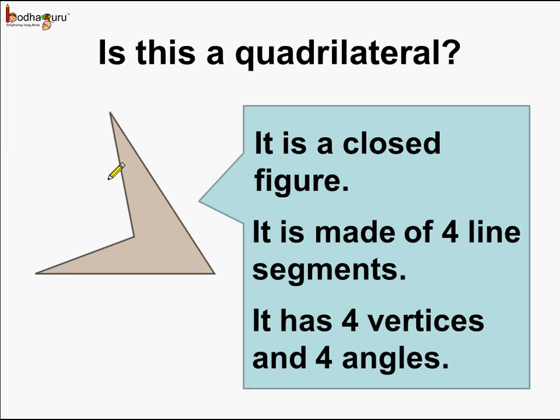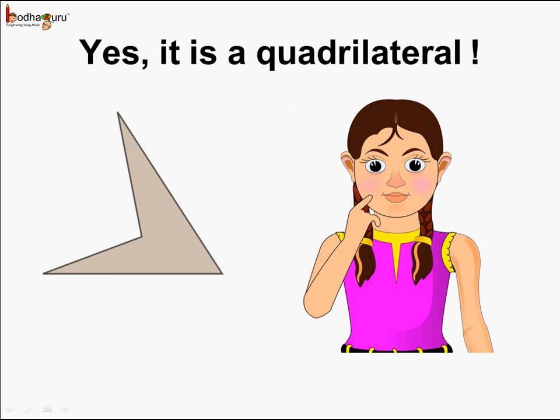And it has four vertices and four angles. Let us call this vertex A, vertex B, vertex C and vertex D. So it has four vertices and four angles: angle A, angle B, angle C and angle D. So what can we say? Yes, this figure, rather this closed figure with four line segments as its sides is a quadrilateral.